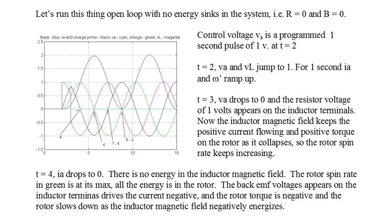Pay close attention. At T equals two, the control voltage jumps up and appears immediately on the inductor terminals, so the voltage jumps up too. For one second, the current ramps up. The rotor torque is positive, and omega (the rotor rate) and omega prime (the rotor acceleration) ramp up. At T equals three, V_A drops to zero, and the resistor voltage of one volt appears as a negative voltage on the inductor terminals. The inductor magnetic field keeps positive current flowing and positive torque on the rotor as the magnetic field collapses, so the rotor spin rate keeps increasing.